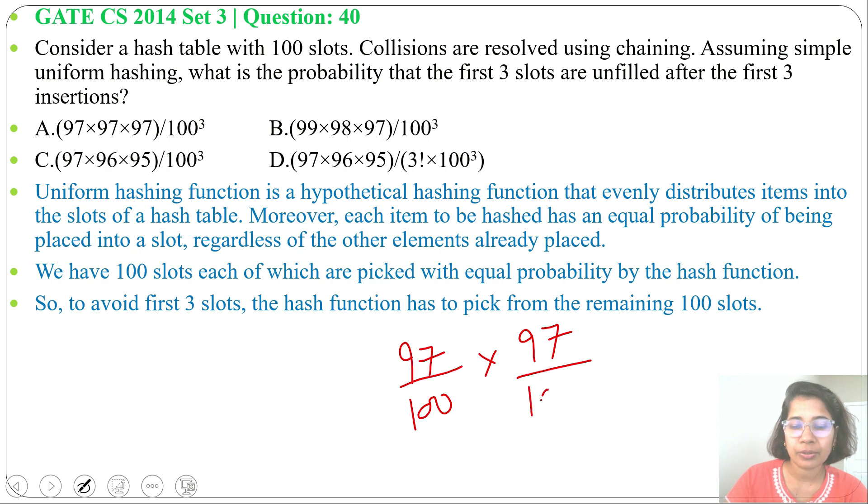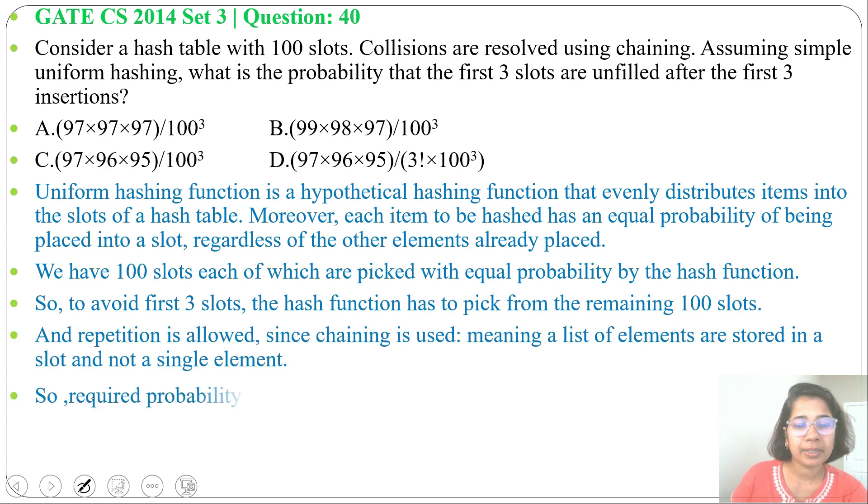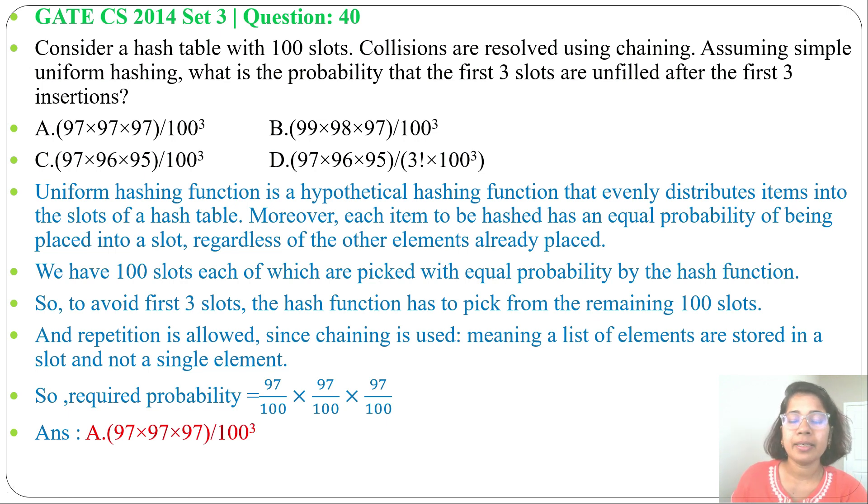As repetition is allowed, it's 97/100. For third key, probability is also 97/100. So probability will be 97 × 97 × 97 divided by 100 cube. It's present in option A, so answer will be option A.